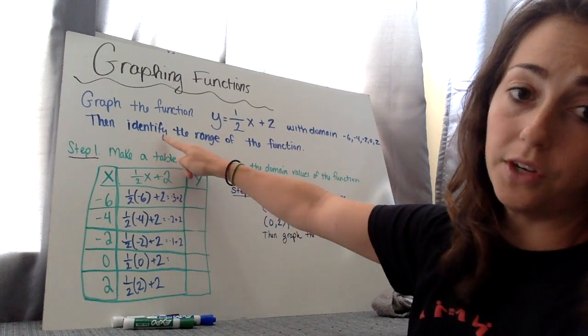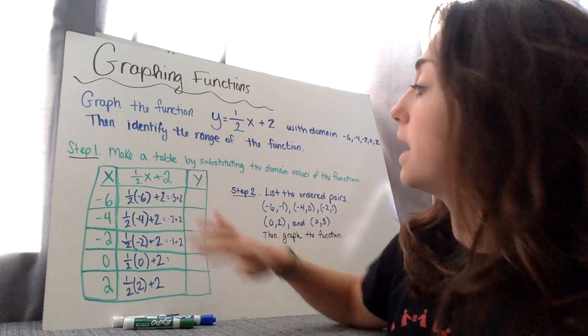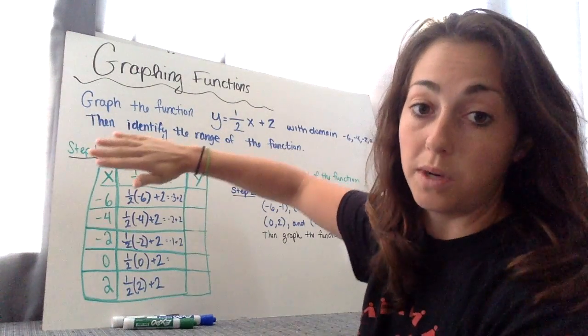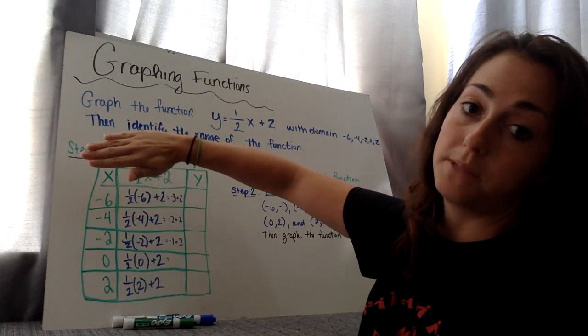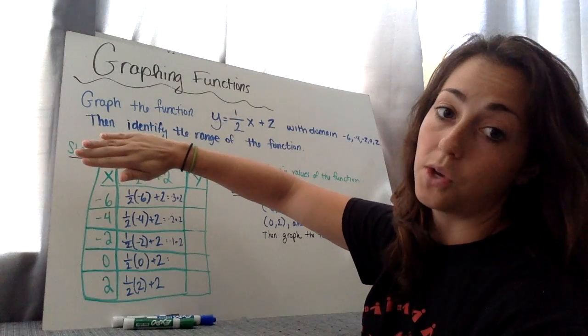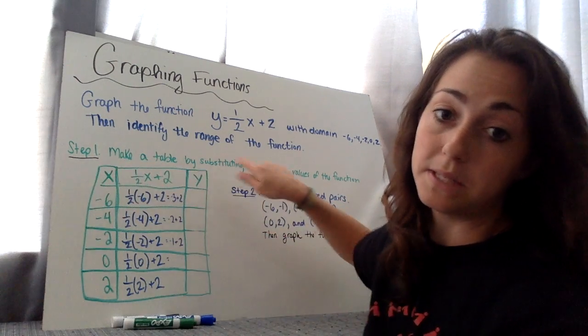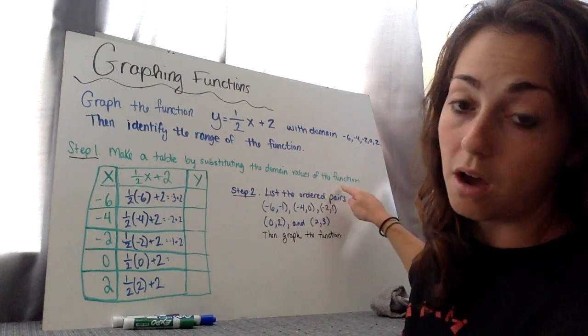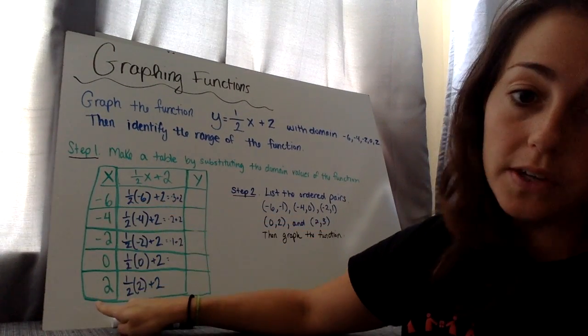Then after, identify the range of the function. So I have steps on how you'll do this. When you get this problem, it will literally say this, all that blue part up top there, and that's it. So your step one, the first thing to do is to make a table of values by substituting the domain values of the function. So here's our domain values. That's our x values.